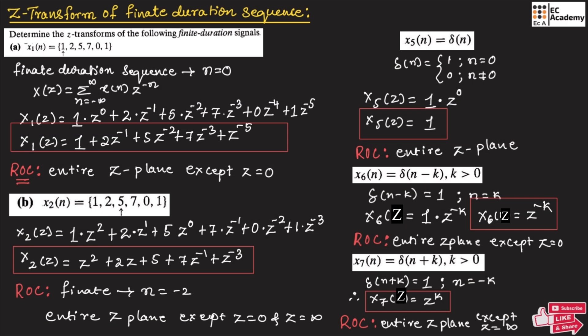This is about problems on Z-transform of finite duration sequences. Hope you have understood the topic. Thank you.